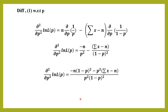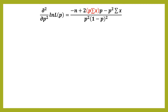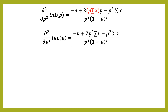Taking the LCM of p² and (1−p)², the numerator becomes −n·(1−p)² − p²·(Σx − n). Expanding: −n + 2np − np² − p²·Σx + np². The np² terms cancel, leaving −n + 2np − p²·Σx. Substituting np = p·Σx using our MLE result n = p·Σx, this becomes −n + 2p·Σx·p − p²·Σx.